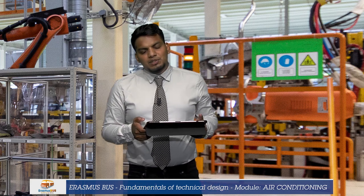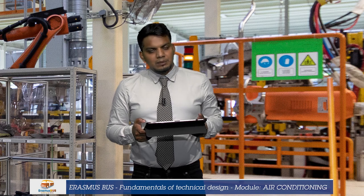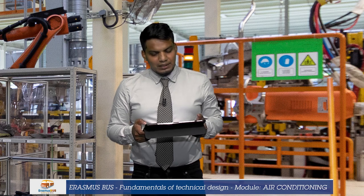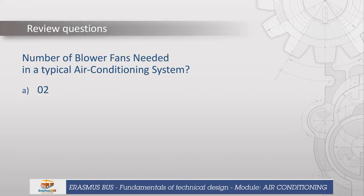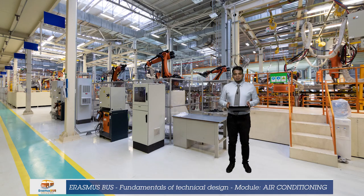That explains some of the most important symbols used in air conditioning systems. Let's have a question: how many blower fans are needed in a typical air conditioning system? A) 2, B) 4, C) 3, D) 1. That explains some of the widely used symbols in the air conditioning industry. I hope you all understood. Thank you very much for your kind attention. Bye.